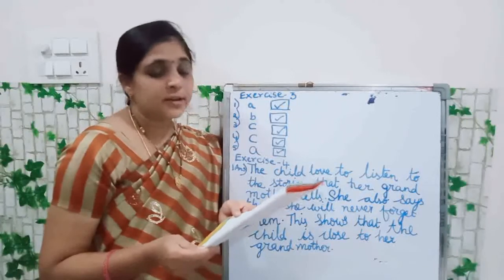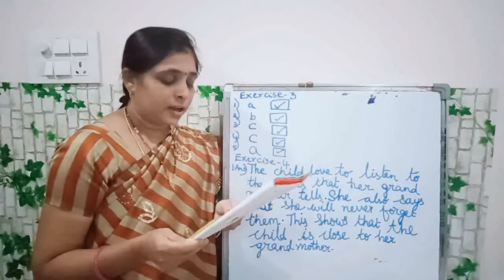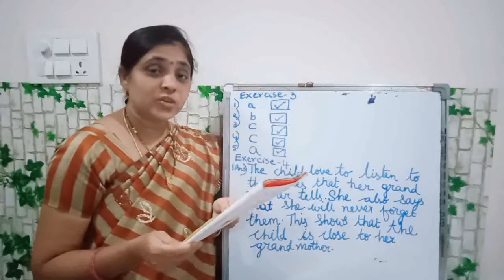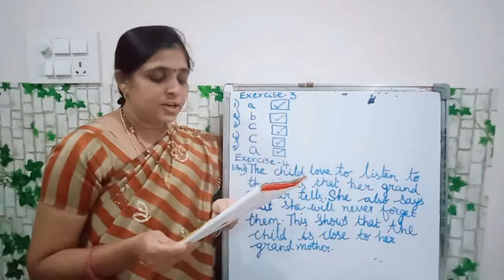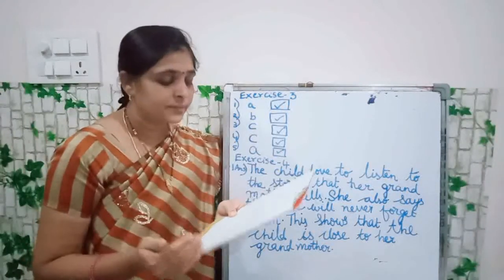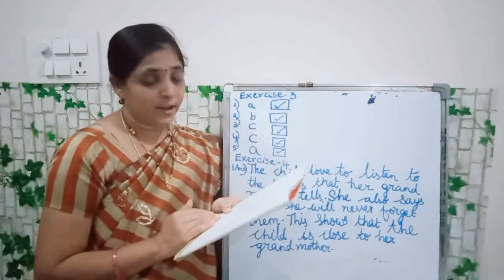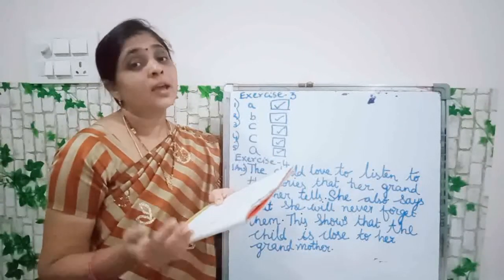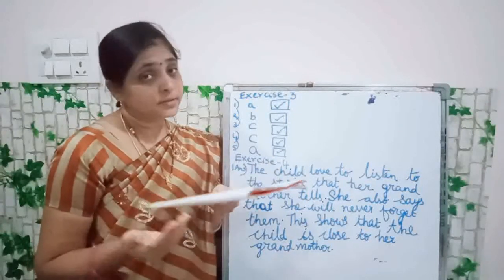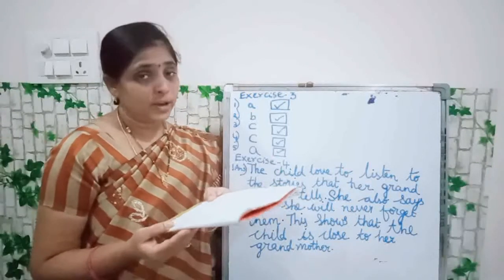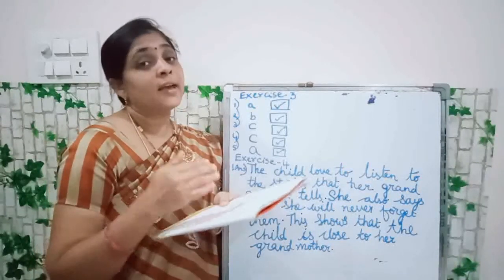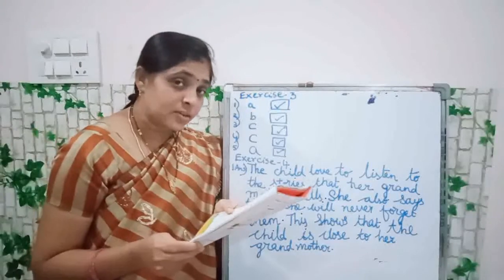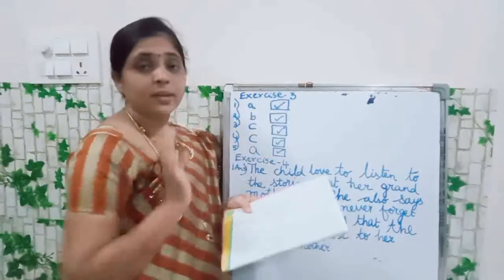Next: The poet never forgets a tale that — A: She hears after sunset, B: She hears in school, C: She hears with her friends, D: She reads by herself. The poet never forgets a tale that she hears after sunset. The poet will never forget the stories which the child hears after the sunset. So the answer is A — all of you tick in A.